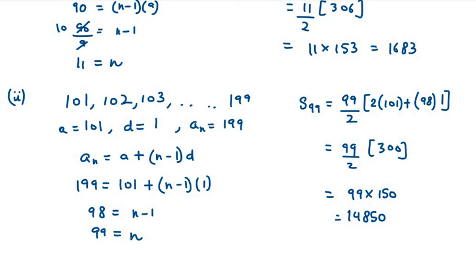So now they have hint that total is 14,850 minus those numbers which are divisible by 9. So it is 1683. So let's subtract this and you will get 13,167. So that's your answer for the second part.